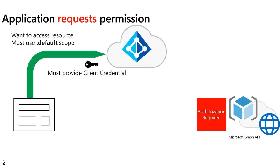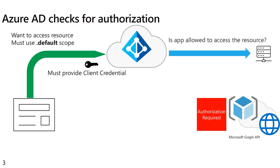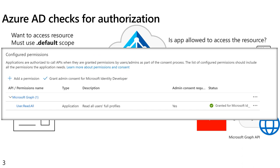Once that is provided, Azure AD will go ahead and determine whether or not this application is actually allowed to access the resource. And in the case of an application permission, exactly what specific operations on that resource as well. What we do is we go look at the application registration, or possibly the service principal if it is a multi-tenant service that's running.